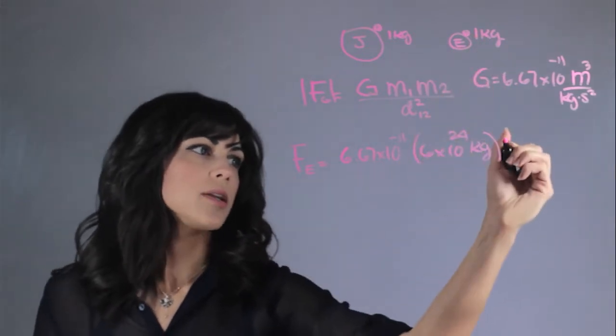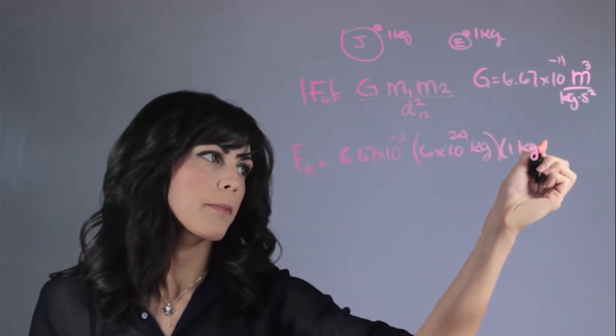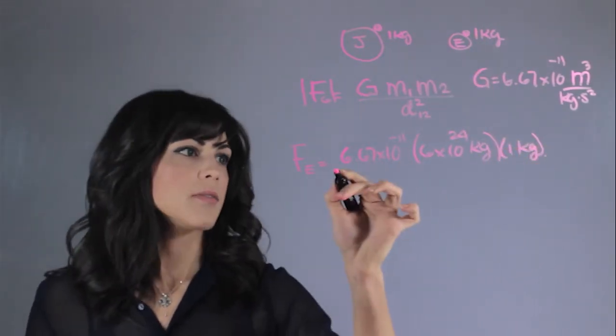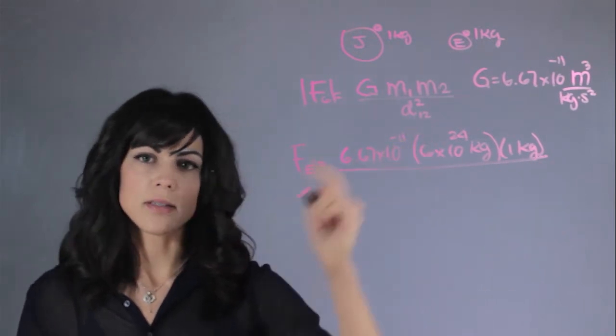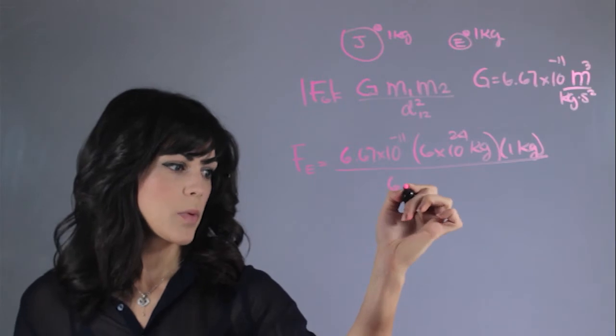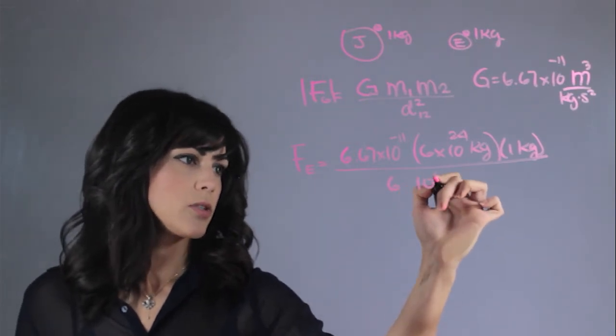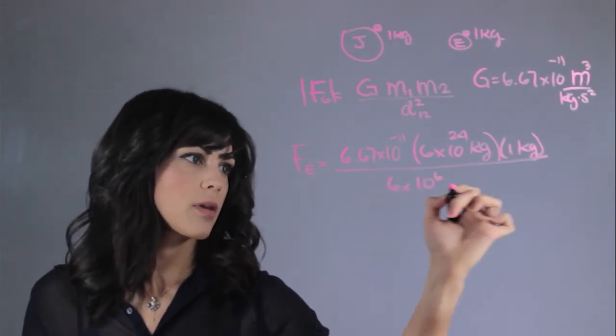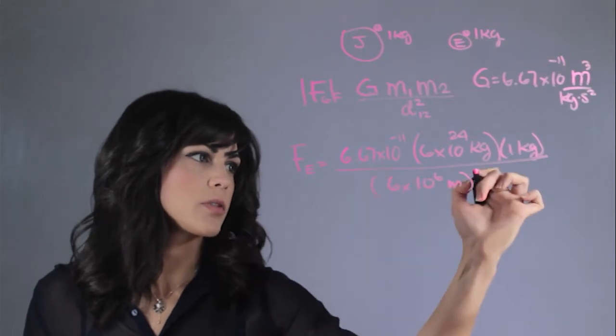And then the mass of the rock, we said it was one kilogram. And then let's divide it by the distance squared. The distance squared is 6.4 times 10 to the 6 meters, and all of this squared.